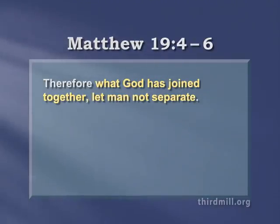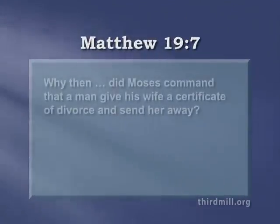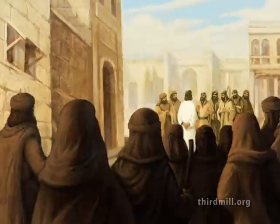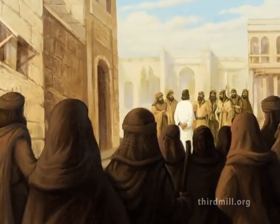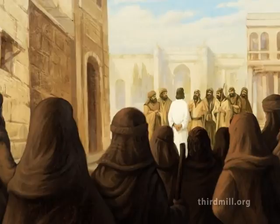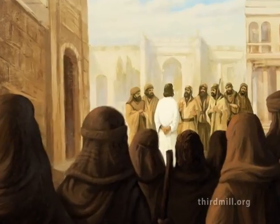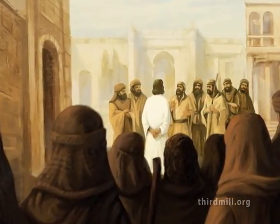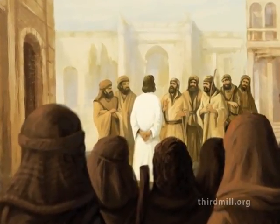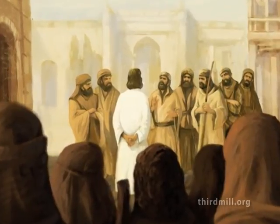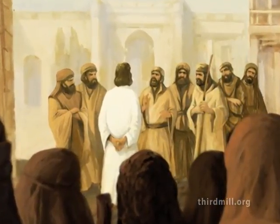After Jesus described the theological perspective on marriage at the time of creation, the Pharisees asked him explicitly about Deuteronomy chapter 24. Listen to what they said in Matthew chapter 19 verse 7: Why then did Moses command that a man give his wife a certificate of divorce and send her away? In line with beliefs in the first century, Jesus and the Pharisees knew that Moses' teaching about marriage was harmonious with the theological structures God had ordained in the beginning. So how could Jesus defend what he had just said in light of what Moses had said about divorce? In response, Jesus explained that a significant diachronic development — a theological change — had taken place between the time of creation and the period of Moses.